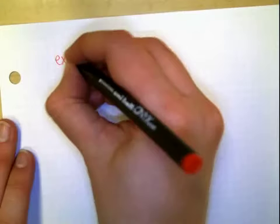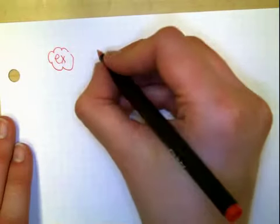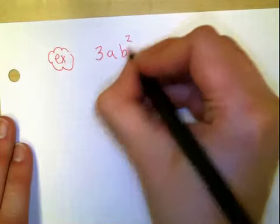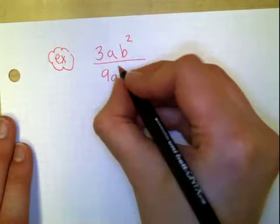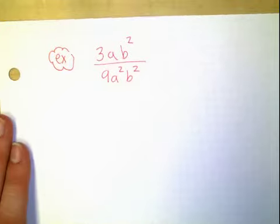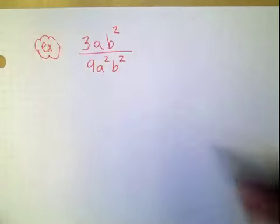So before we end the video, you should try a couple. So try this one. See if you got this down. Take something like 3ab squared over 9a squared b squared. And find the power of 1. So try it. Pause the video. Do it yourself first.